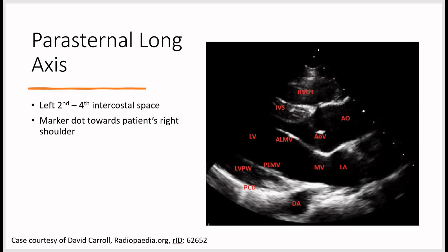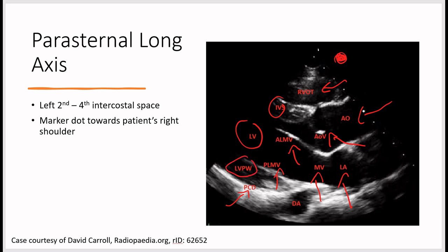The parasternal long axis view is around the second to fourth intercostal space with the probe marker pointing to the patient's right shoulder — it should appear on the right side of the screen. Structures visible include the RVOT (right ventricular outflow tract), ascending aorta, aortic valve, left atrium, mitral valve with its anterior and posterior leaflets, pericardium, left ventricle, interventricular septum, and the left ventricular posterior wall.